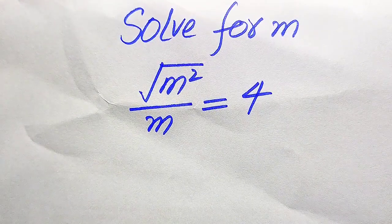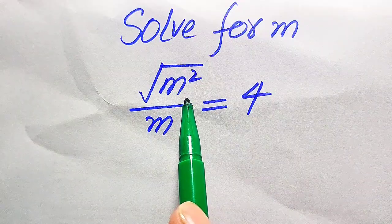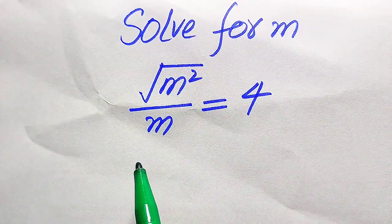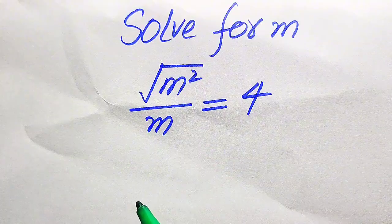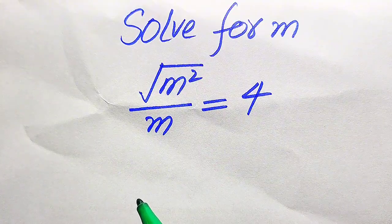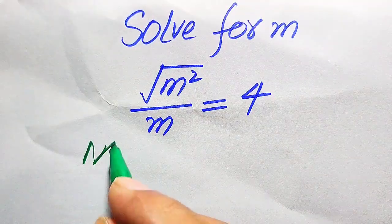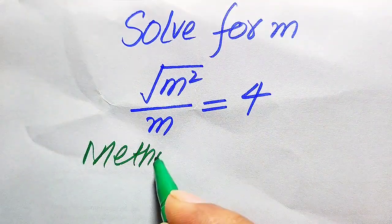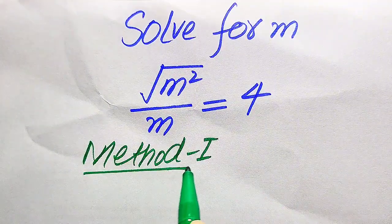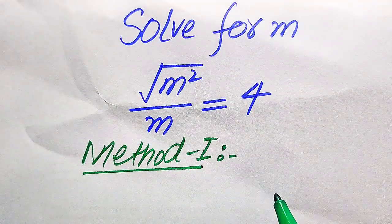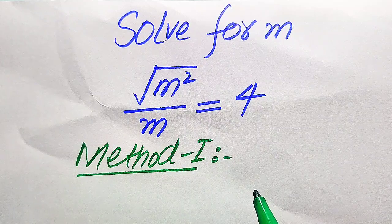Hello everyone. We will solve this problem for the values of m: the square root of m squared, divided by m, equals 4. We will solve this problem using two methods. If you have any other method in mind, please don't hesitate to write it in the comment section. Now we move towards the solution of the first method.